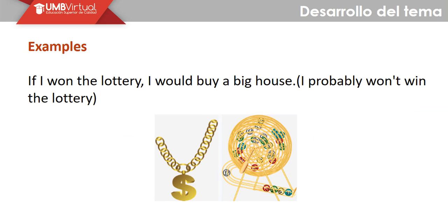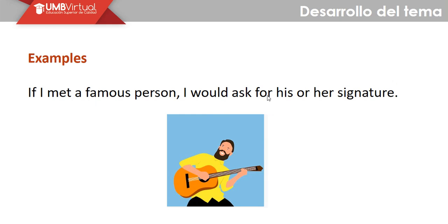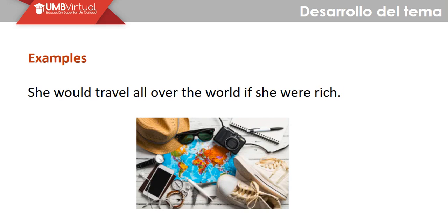Let's see some examples. 'If I won the lottery, I would buy a big house.' I probably won't win the lottery. Entonces, si yo ganara la lotería, yo compraría una casa grande. Aquí vemos el uso del 'if' — el verbo en pasado simple — el uso del 'would' o 'could' — y el verbo en presente simple con el complemento. 'If I met a famous person, I would ask for his or her signature.' 'She would travel all over the world if she were rich.'